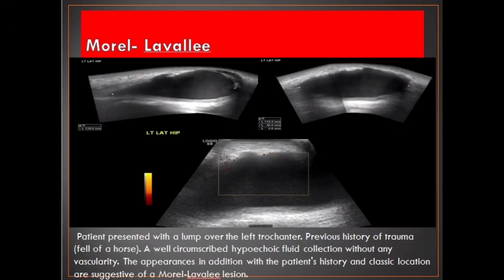Patient presented with a lump over the left trochanter. Previous history of trauma — fell off a horse. A well-circumscribed hypoechoic fluid collection without any vascularity. The appearances, in addition with the patient's history and classic location, are suggestive of a Morel-Lavallée lesion.